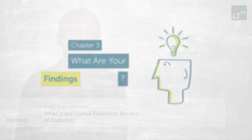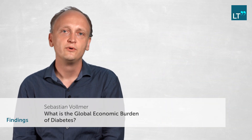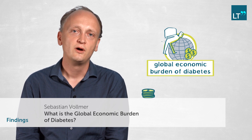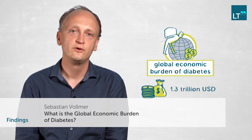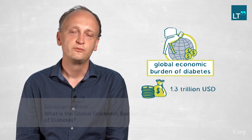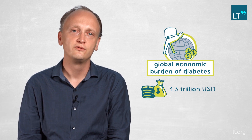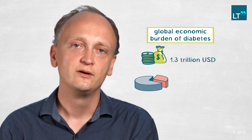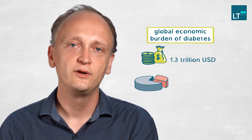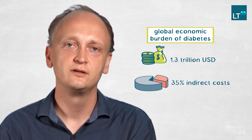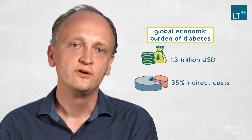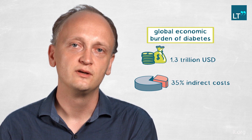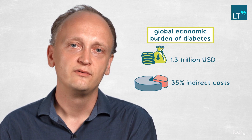Our key findings are that the economic burden of diabetes is quite substantial. The total amount is 1.3 trillion US dollars, which is equivalent to almost 2% of global GDP. Around 35% of the economic burden comes from the indirect cost — the labour market losses. It varies a little bit between countries; in some regions the indirect cost is higher than in others.